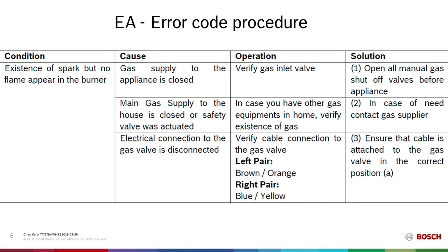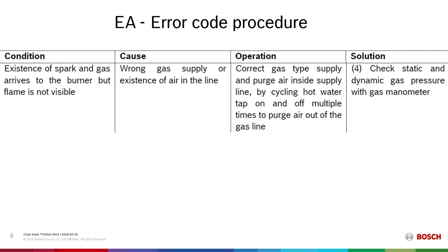Ensure that the electrical connections are made to the gas valve — that's four connections, all in one Molex connector. What if there's spark and gas and the fan's turning, but it doesn't light? Potentially the unit is connected to the wrong fuel type, or a more likely situation for a new installation — there is simply air in the gas line, not allowing the unit to light. Check the gas pressure to make sure that we are supplying gas to the unit.